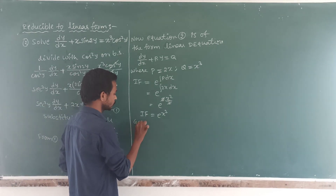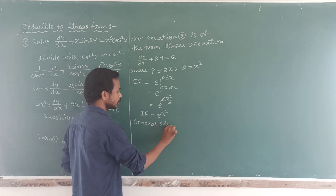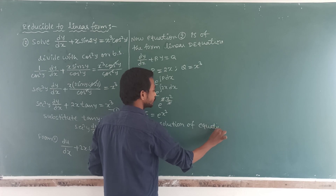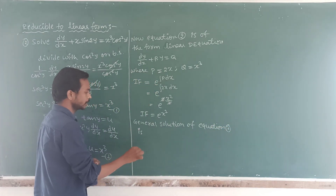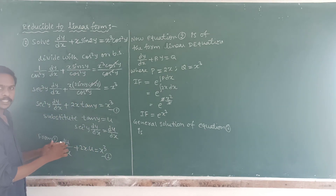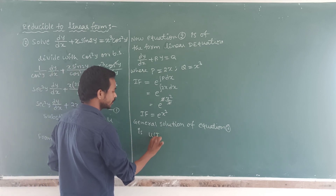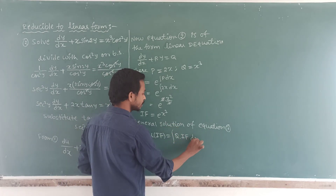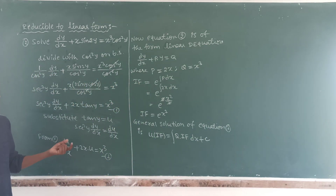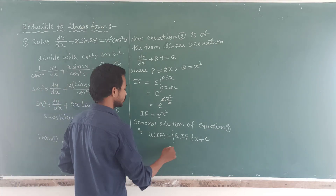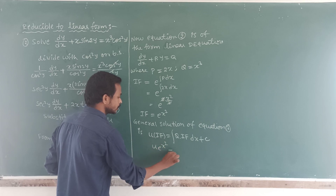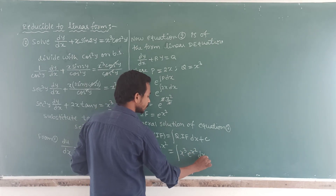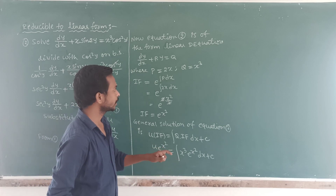The general solution of equation 2 is: u · (integrating factor) = ∫Q · (integrating factor) dx + C. So u · e^(x²) = ∫x³ · e^(x²) dx + C. Now we have to integrate this to get the required solution.